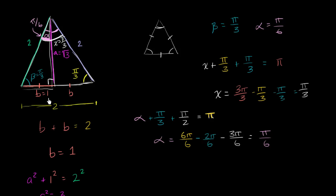Instead of calling it a 30-60-90 triangle, we can call it a pi over six, pi over three, pi over two radian triangle. It has the classic properties: the side opposite the pi over six angle has half the length of the hypotenuse, and the longer non-hypotenuse side is square root of three times the shorter side — that's the side opposite the pi over three radian angle.